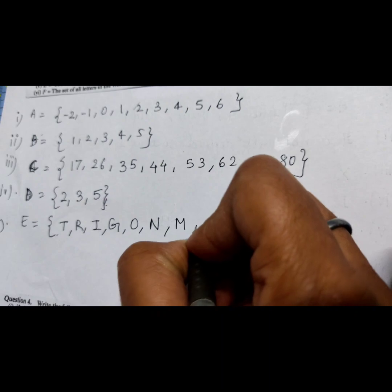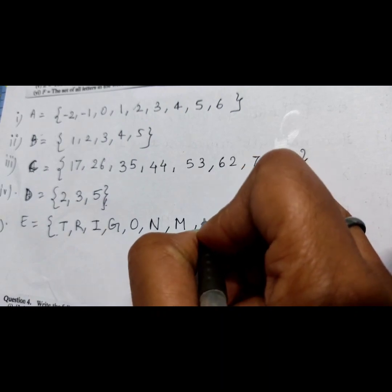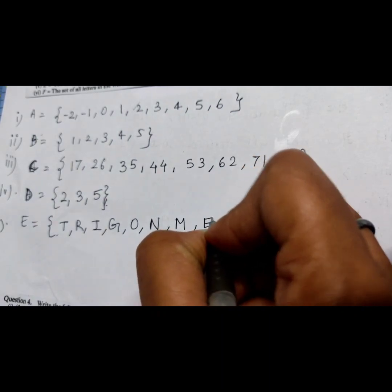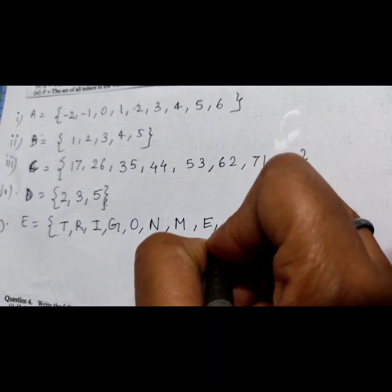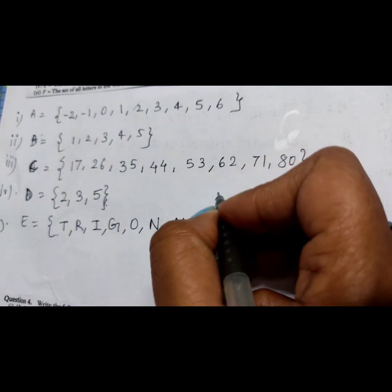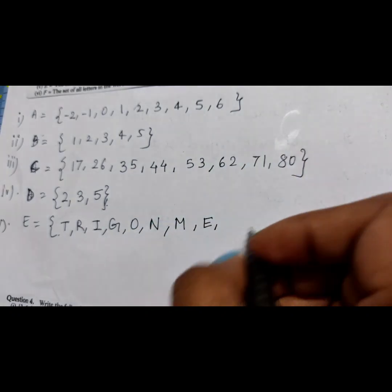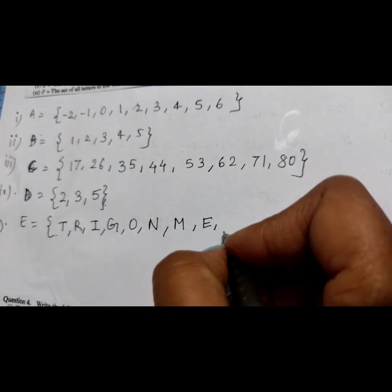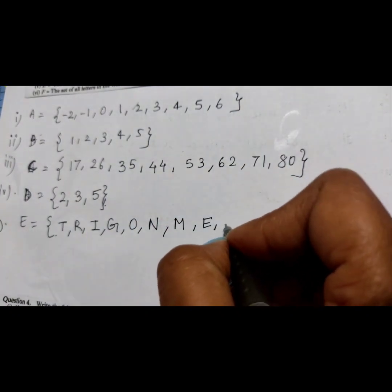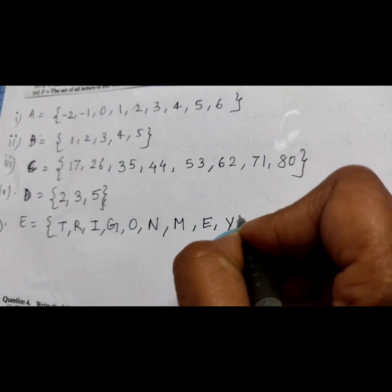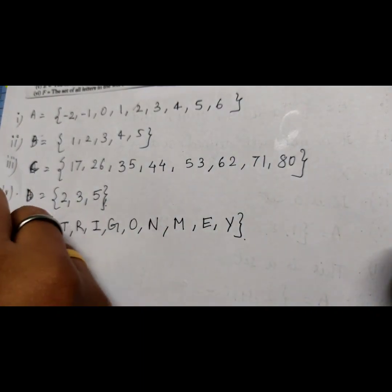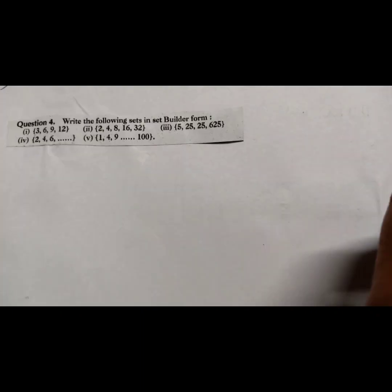The sixth part is similar to trigonometry. The set F = {B, E, T, R} — the letters of the word BETTER written without repetition. Each alphabet is written only once.